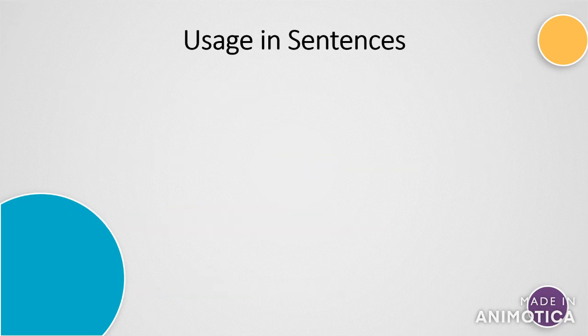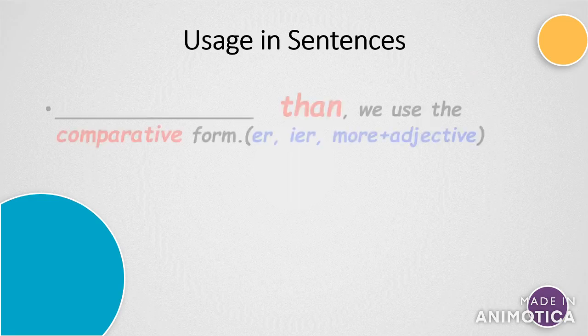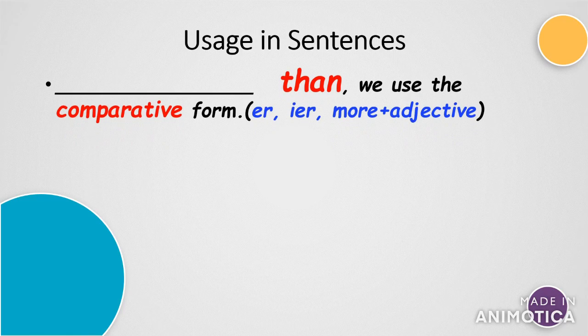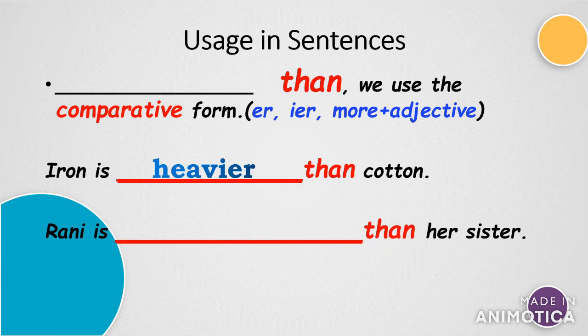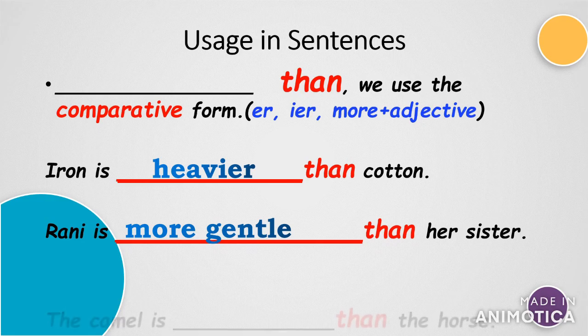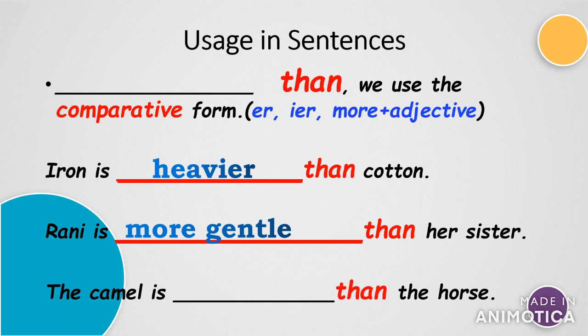Now let's try to understand where we shall use the comparative form of the adjective. If in a sentence you can see the word 'than', then we have to use the comparative form of the adjective. Here are some examples: 'Iron is ___ than cotton' — heavier. 'Rani is ___ than her sister' — more gentle. 'The camel is ___ than the horse' — taller. In all these sentences you find the word 'than' and that is why we use the comparative form.